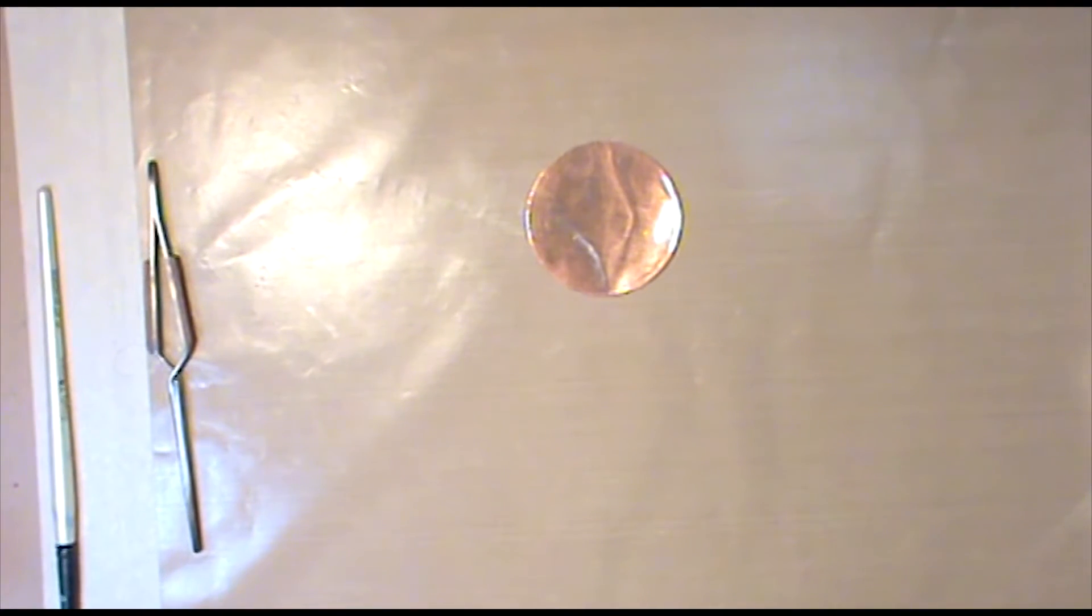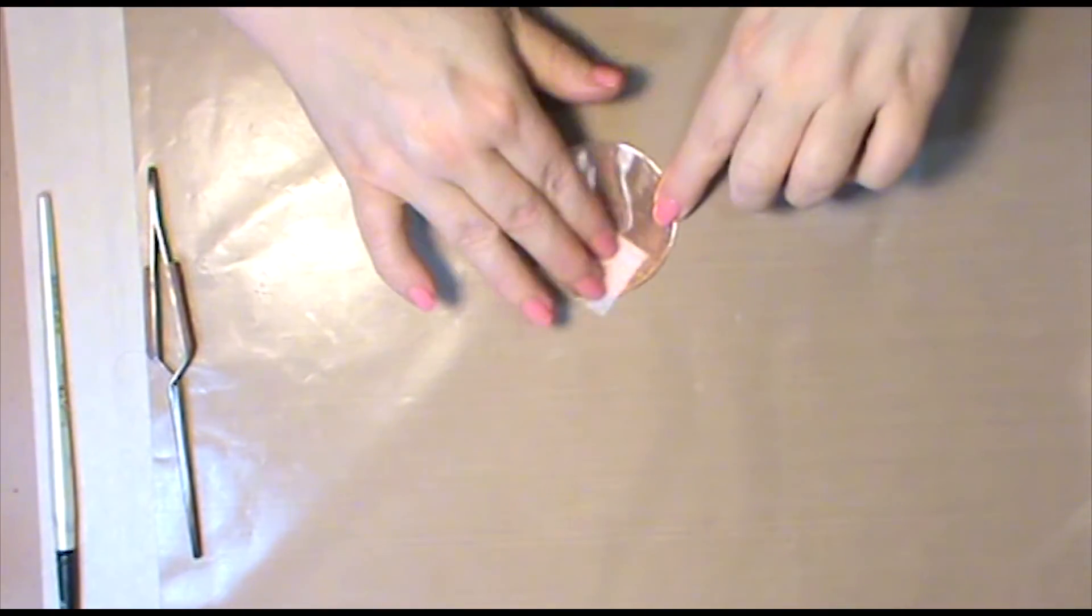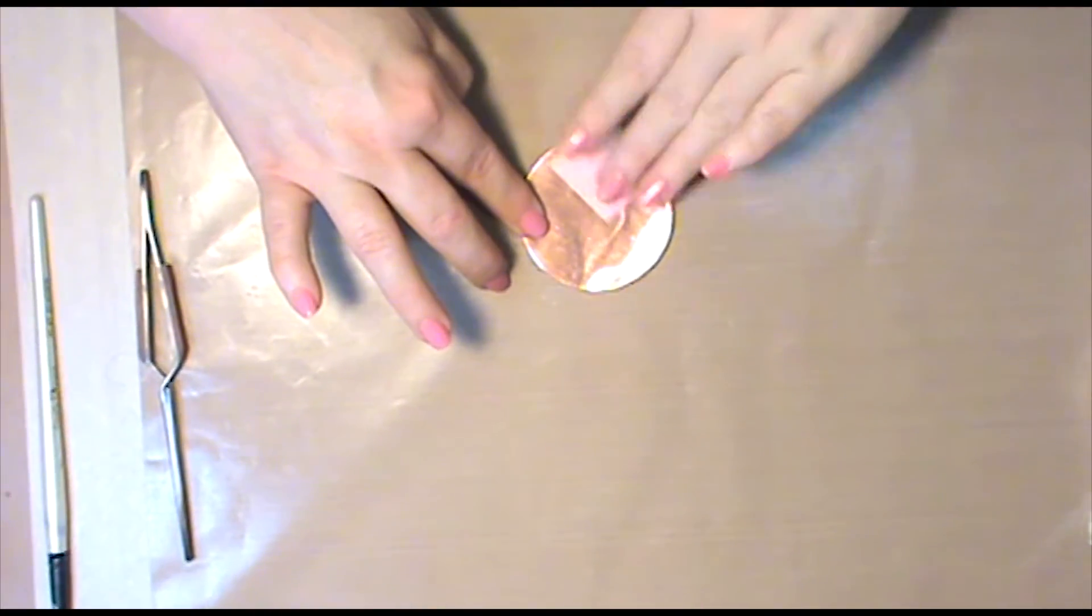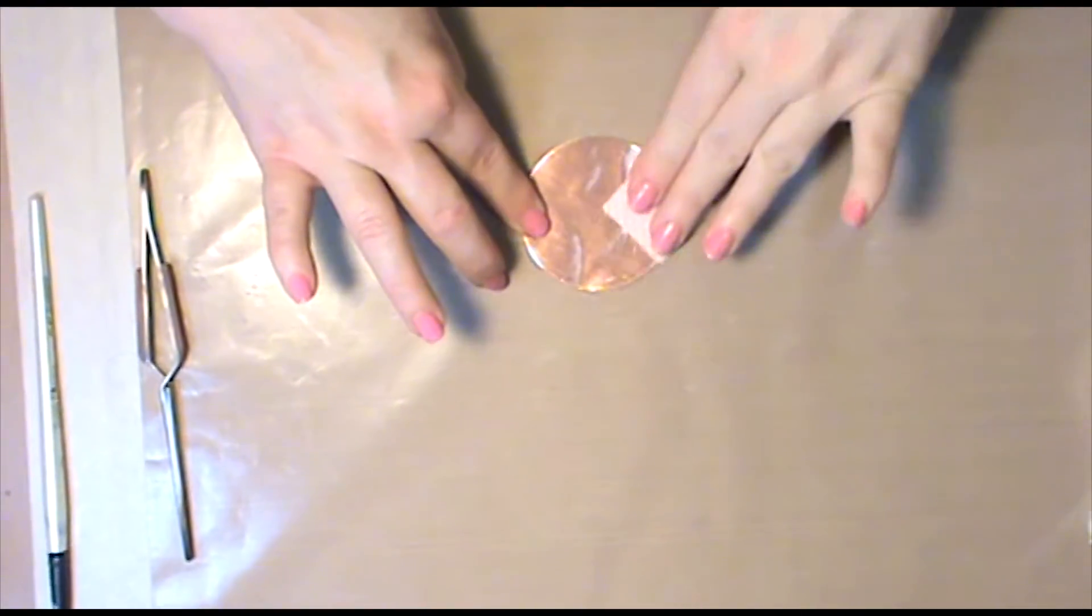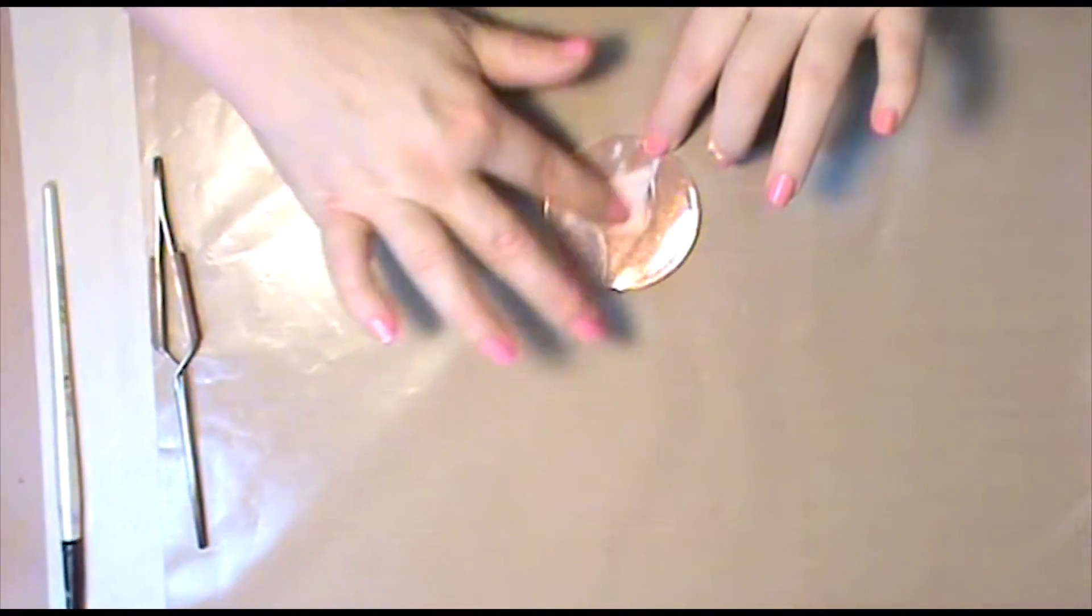Then you want to take your alcohol pad or alcohol soaked cloth and clean the surface of the copper where you'll be stamping and heating. You're basically wanting to remove any type of oils that may have come in contact with the metal, like from your fingers for example. If your copper is really dirty or oxidized, you'll want to clean it properly before starting this technique.